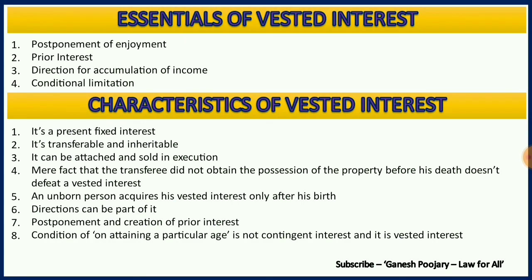Before concluding, let us look at the essentials and characteristics. The essentials are: there should be postponement of enjoyment, there should be prior interest created, there should be a direction for accumulation of income, and there can be conditional limitations. The characteristics are: it is a present fixed interest; it is transferable and inheritable; it can be attached and sold in execution; the mere fact that the transferee did not obtain possession before his death does not defeat a vested interest; an unborn person acquires vested interest only after birth; and a condition of attaining a particular age is not contingent interest — it is vested interest because it is going to happen.